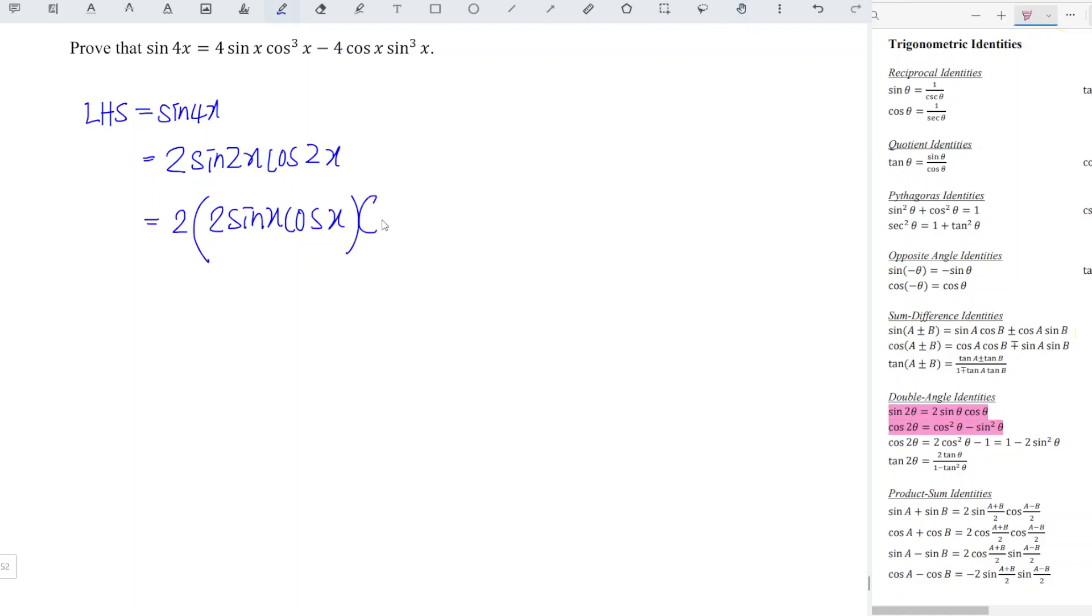So we have cos square x minus sine square x. And let's expand. So 2 times 2 is 4, sine x cos x times cos square x, which means that we have cos cube x. And same for the other term.